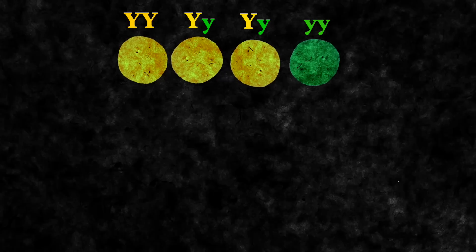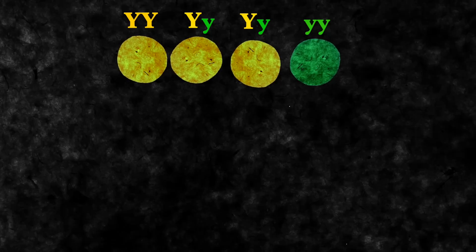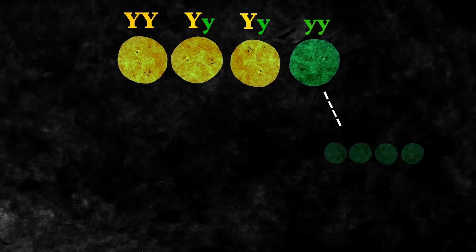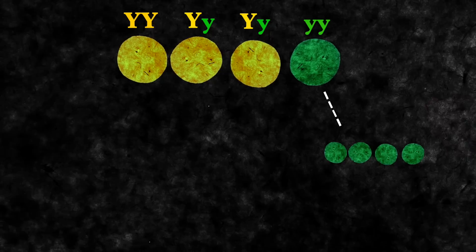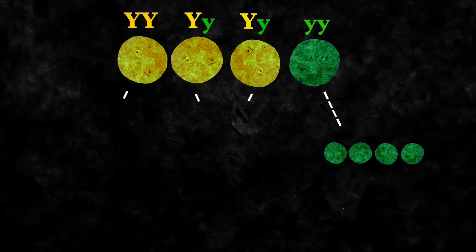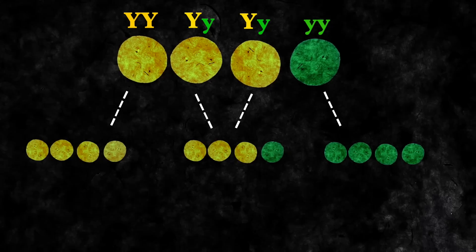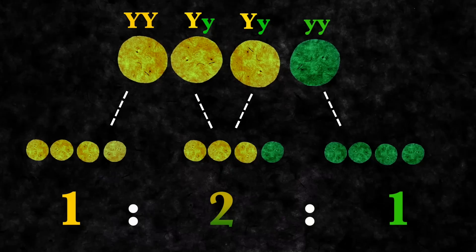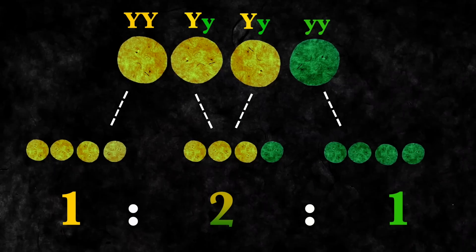Further experiments led Mendel to realize that the progeny of the recessive form always exhibited the recessive form, whereas the progeny of the dominant form could exhibit dominant or recessive forms. This led Mendel to conclude that the 3 to 1 ratio was actually a 1 to 2 to 1 ratio.